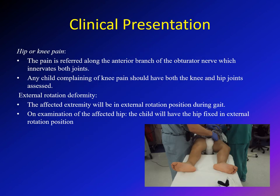One very important point is that the child can present with hip or knee pain. This is because pain is referred along the anterior branch of the obturator nerve, which innervates both the hip and the knee. About 50% of children will come complaining of knee pain, not hip pain. So if you have a 13-year-old obese child complaining of hip or knee pain, think about SCFE.